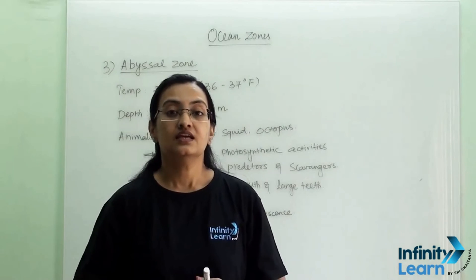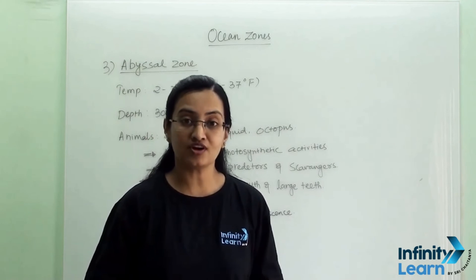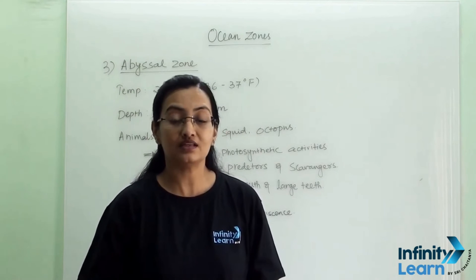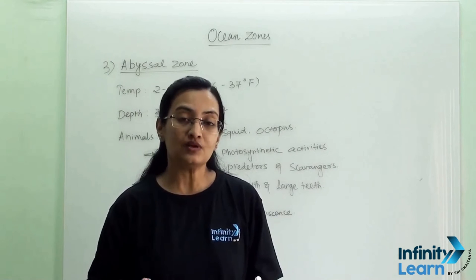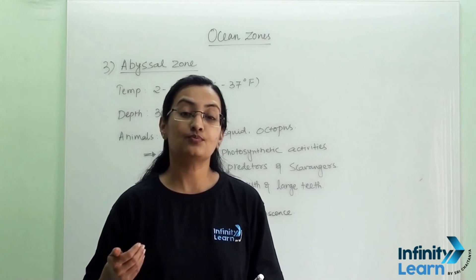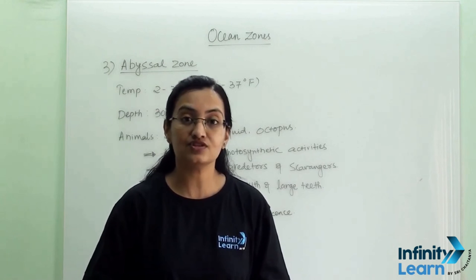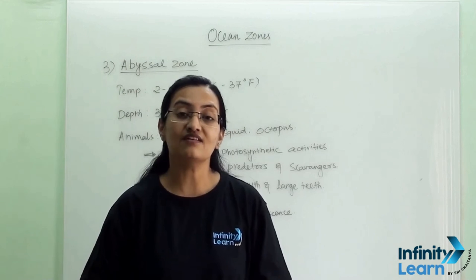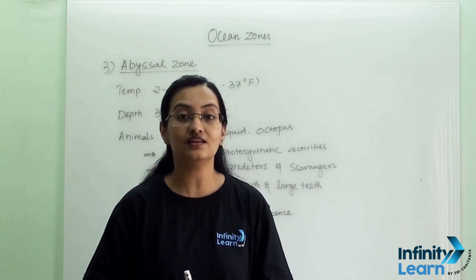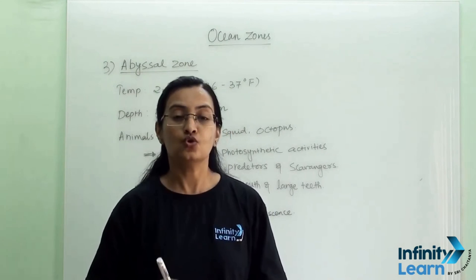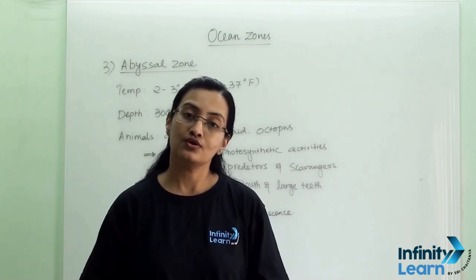So we have seen there are three zones of the ocean. The first one is the euphotic zone, the second is the bathyal zone, and the third is the abyssal zone. As their depth varies, the temperature and pressure also vary. According to these characteristics, animals have adapted features so that they can stay in their respective zones. Zone-wise, the animals and their adaptations will differ.